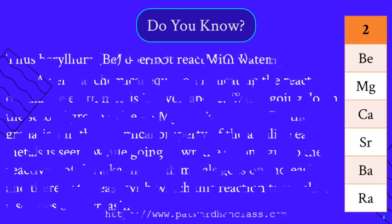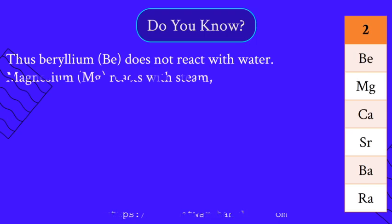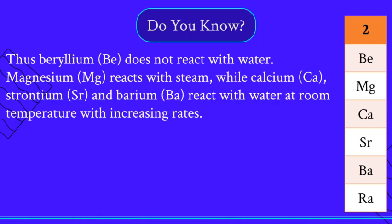For example, beryllium does not react with water. Magnesium reacts with steam, and the reaction takes place at high temperature. Calcium, strontium, and barium react with water at room temperature, with increasing rates.